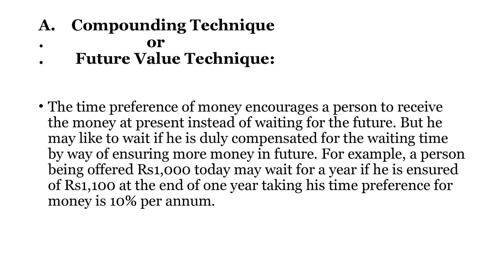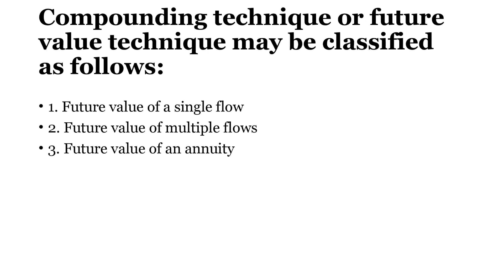First we will start with the compounding technique. The compounding technique is used to find the future value of all cash flows at the end of a time horizon at a particular rate of interest. For example, if we deposit Rs. 1000 in a bank at 10% interest rate, at the end of the year we receive Rs. 100 as interest plus the principal of Rs. 1000, totaling Rs. 1100. In compounding, there are three scenarios: finding the future value of a single cash flow, of multiple cash flows, and of an annuity.